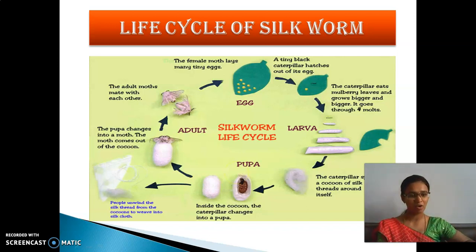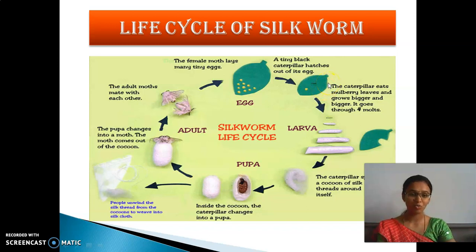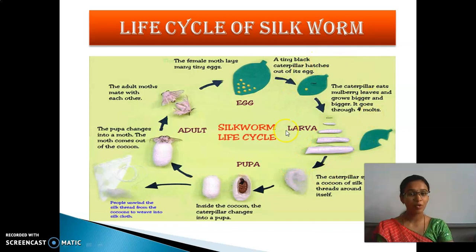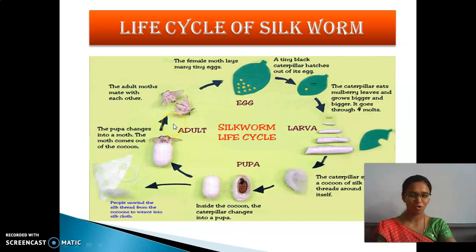There is no end - it keeps on going continuously. If one stage is not available, the total system gets spoiled - there will be no caterpillars, no silkworms, no silk thread. It has to keep going continuously. It is named as the life cycle of silkworm. Up to this, I hope you are clear.